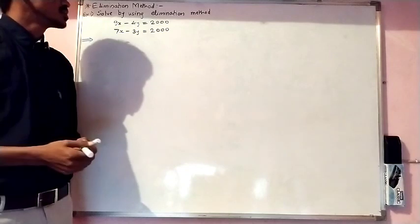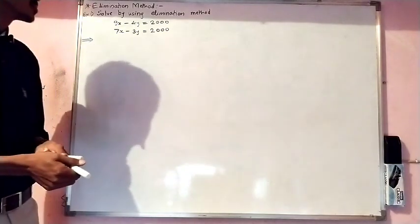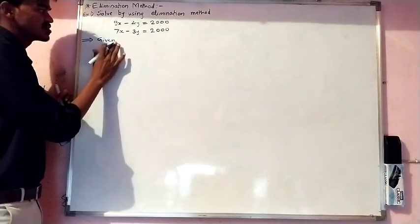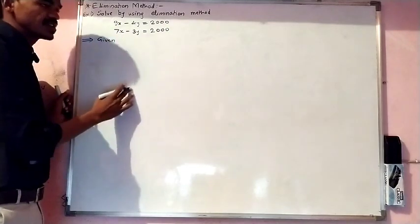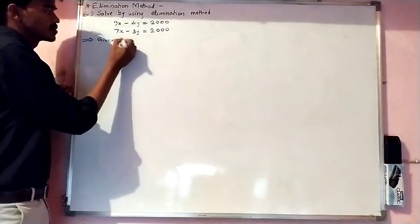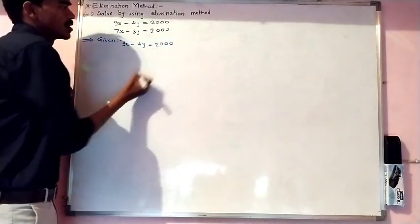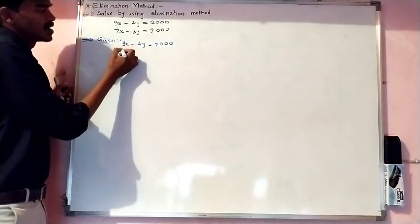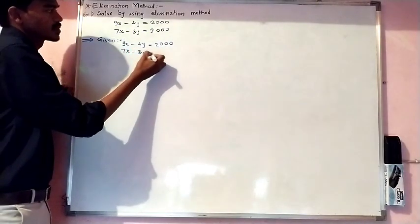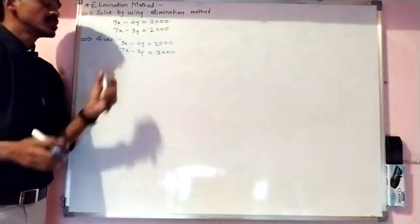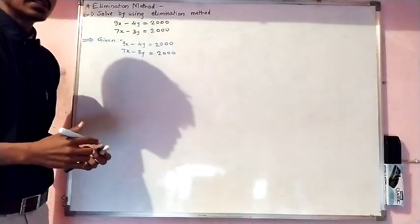The given information is about two linear equations with two variables — that means a pair of linear equations in two variables. The first equation is 9x minus 4y equals 2000, and the second is 7x minus 3y equals 2000. Using the elimination method, we need to eliminate one variable to get the value of the other.